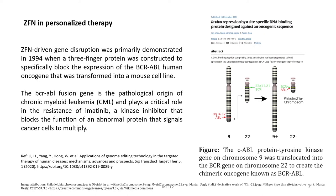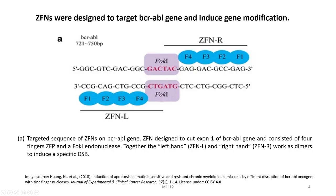BCR-ABL plays a critical role in the resistance of imatinib, a kinase inhibitor that blocks the function of an abnormal protein that signals cancer cells to multiply. In the publication by Chu et al, the in vivo preparation by a site-specific DNA binding protein designed against an oncogene sequence was published in Nature in 1994. The C-ABL protein tyrosine kinase gene on chromosome 9 was translocated into the BCR gene on chromosome 22 to create a chimeric oncogene known as BCR-ABL, and ZFNs were designed to target the BCR-ABL gene and induce gene modification.